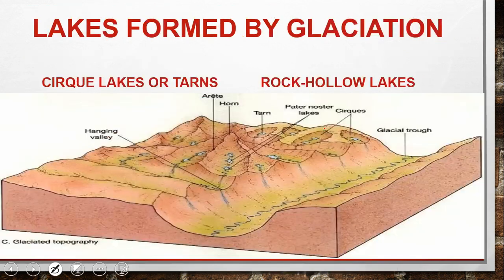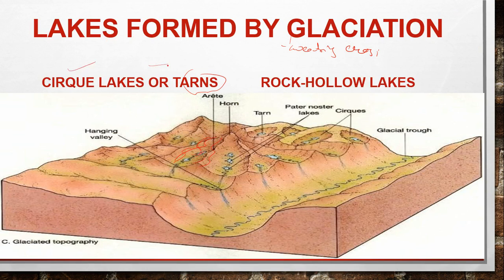Next are glacial lakes, formed by glaciation. A glacier causes weathering and erosion, creating a hollow structure called a tarn or cirque. Water collects in these hollows to form a lake — these are called tarn or cirque lakes. There are also rock hollow lakes formed by glaciers. Another type is the hanging valley lake, where water collects in a valley suspended higher up due to glacial action.